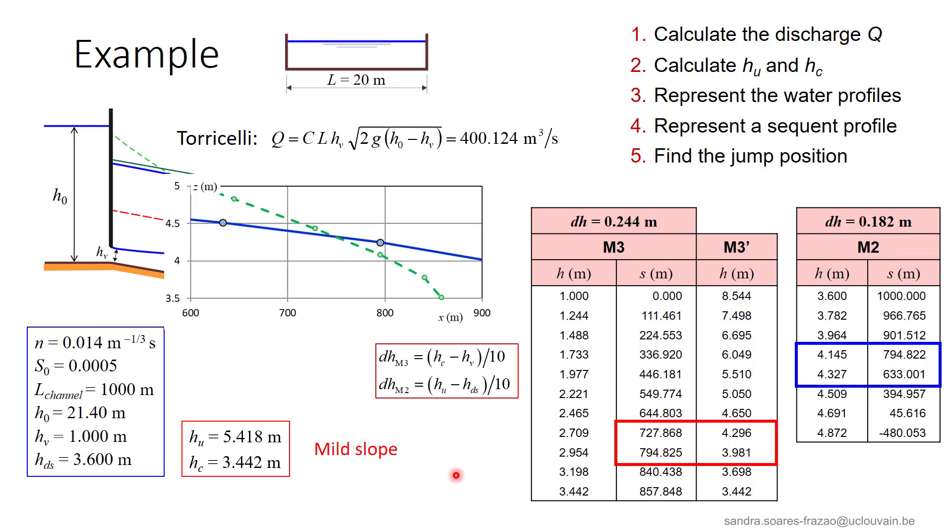The exact value of the position of the hydraulic jump is obtained by calculating the intersection between the two curves, the blue one, that is the M2 profile, and the green one, that is the M3 prime profile.